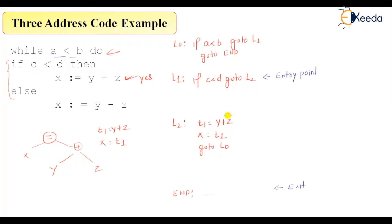This is the yes part. The no part is something like t2 is equal to y minus z, and x equal to t2. And again reiterate the condition, so here also I'll write go to L0. So this will take the part jump over here.